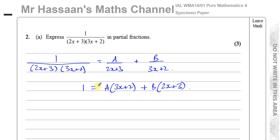So now I have this identity from which I need to find the values of A and B. There are two main methods: one is substituting values of x that make one of the terms zero, or comparing coefficients of x and the constant on both sides to set up simultaneous equations.